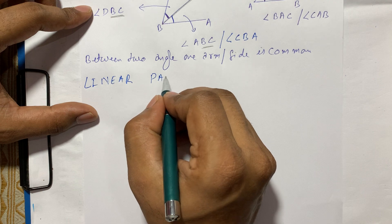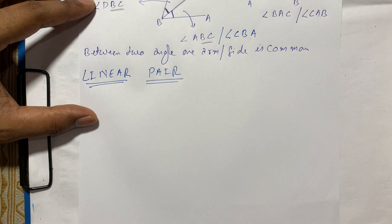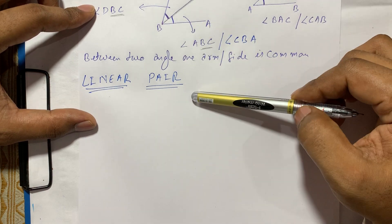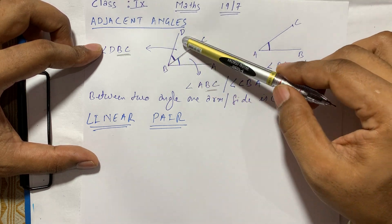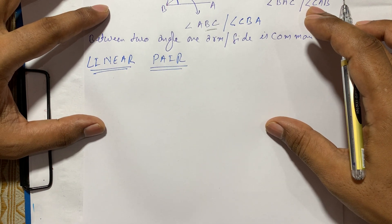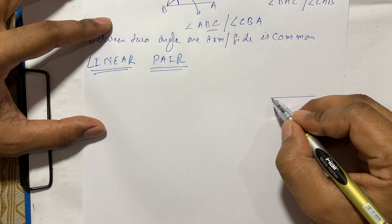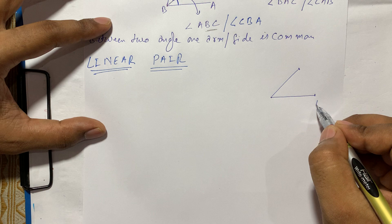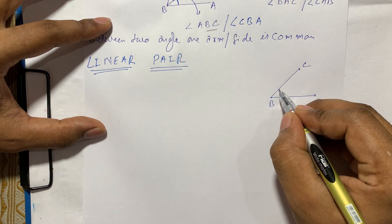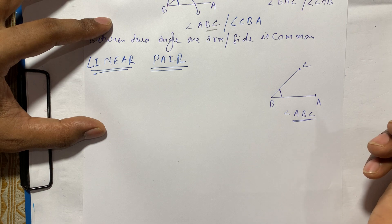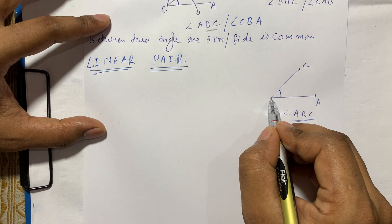Next, let's see linear pair. Suppose we form an angle here — this angle is named ABC. Now we want to add an adjacent angle. When you add an adjacent angle, one arm must be common. Suppose this common arm is BC. And we need another arm.